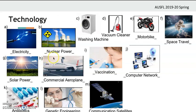Let's focus on the meaning of some of them. Let's start with vaccination. Vaccination is an injection put into a person's body to prevent them from a disease. For example: there is no vaccination against coronavirus yet.